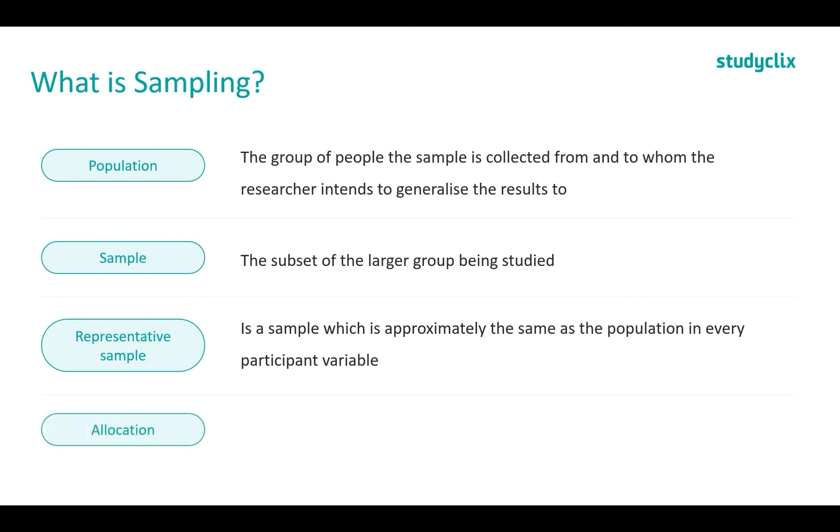Next let's talk about allocation. This is splitting the sample up into smaller groups that may experience different conditions. So we have our big population group, we've taken a sample from the population and now we're splitting the sample into different groups. So one group will experience one condition and the other group will experience a different one.